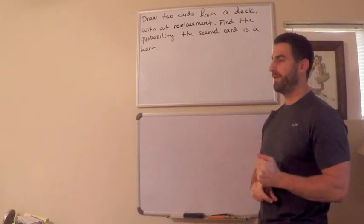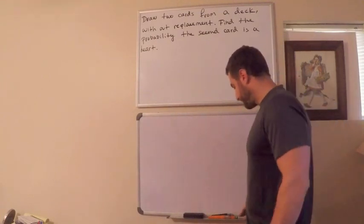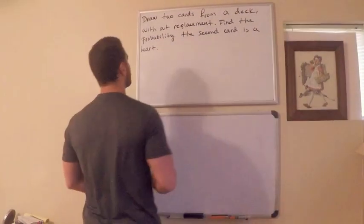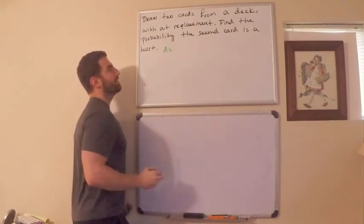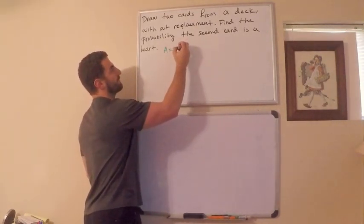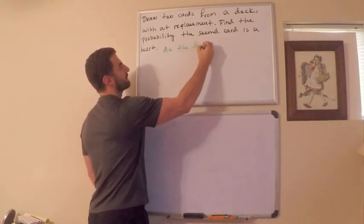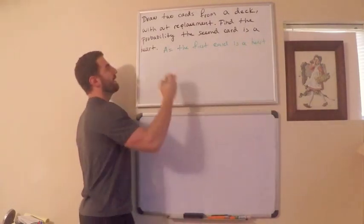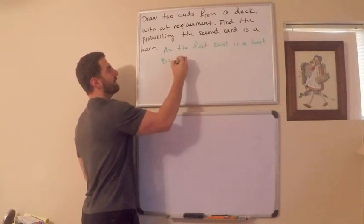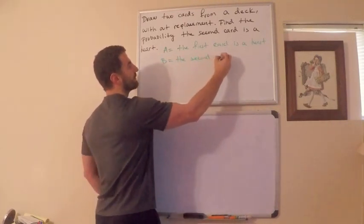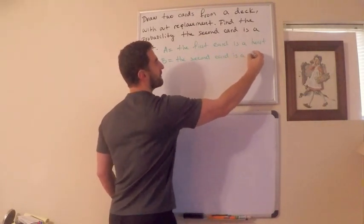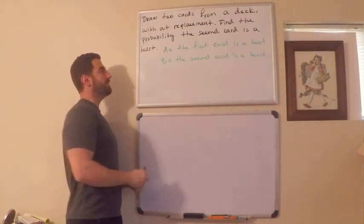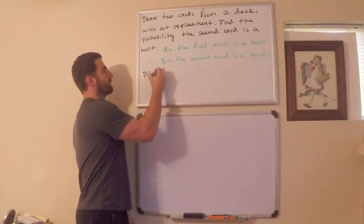I want to know the probability that the second card is a heart. I'll write down two events. Let A be the event that the first card is a heart, and let B be the event that the second card is a heart. What I'm looking for is the probability of B — the probability the second card is a heart.